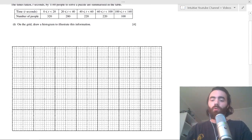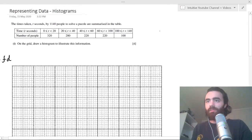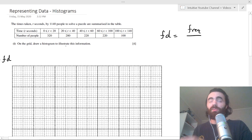And a histogram always has on the y-axis, you have the frequency density, not the frequency, the frequency density. And on the x-axis, you have the class width or the time here and the time t. And the frequency density is just equal to the frequency over the class width or interval width. I'll call it class width.